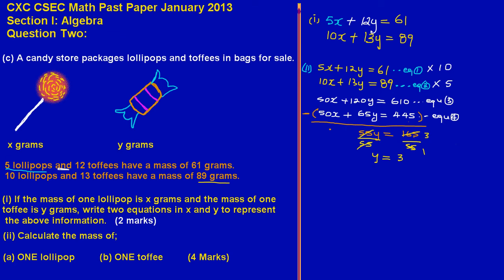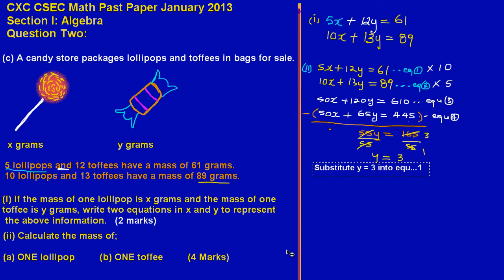I'll substitute Y = 3 into equation 1, since it's the simplest equation. Equation 1 states: 5x + 12y = 61. Replacing Y with 3 gives: 5x + 12 × 3 = 61.